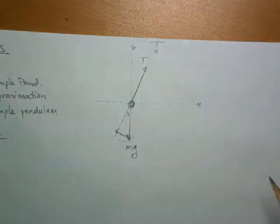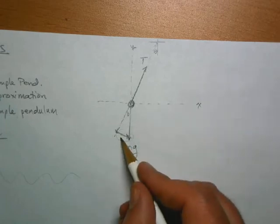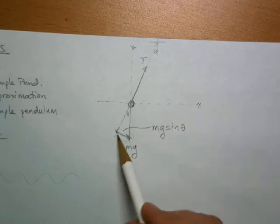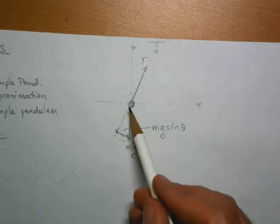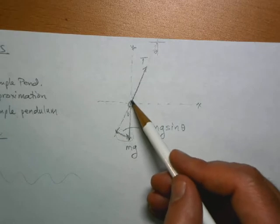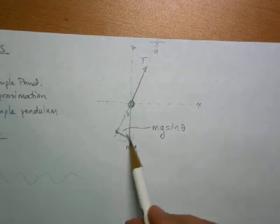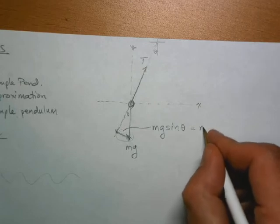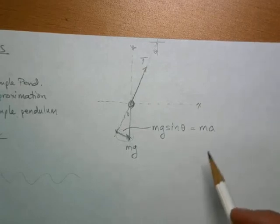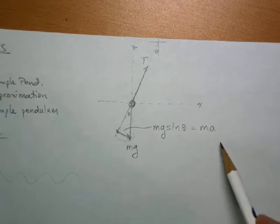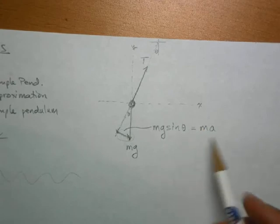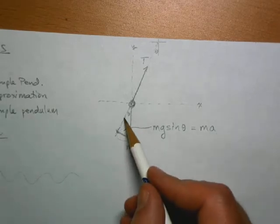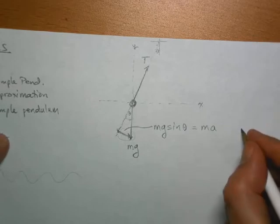Perpendicular to the string there can be an acceleration, and that's the net force that causes this thing to accelerate. Doing a little geometry: theta is up here at the top, therefore theta will also be down here in the triangle. So this net force is mg sine(theta), because it's the opposite leg of the right triangle. It's this component perpendicular to the string that makes the pendulum swing back and forth, so this equals ma.